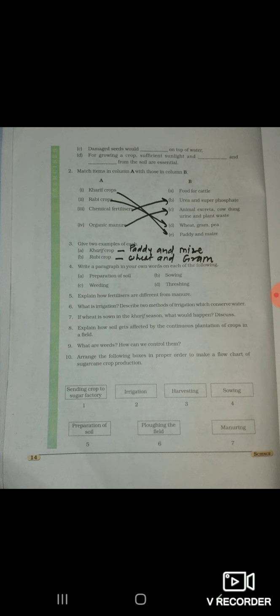Seven, if wheat is sown in the kharif season, what would happen, discuss. Nahi aayega. Eight, explain how soil gets affected by the continuous plantation of crop in field, yeh bhi nahi aayega.